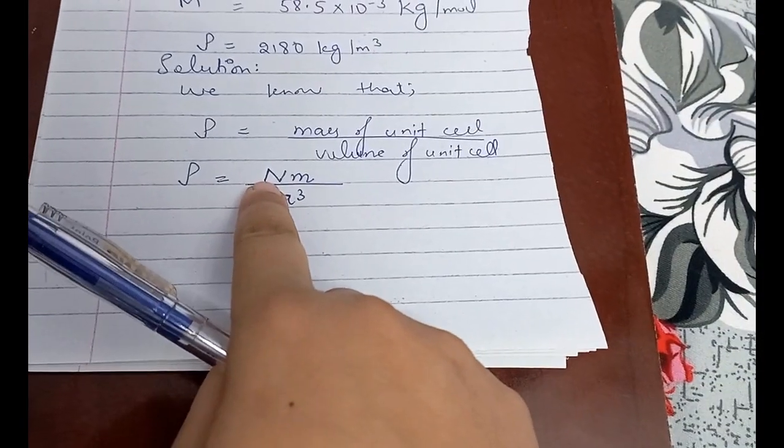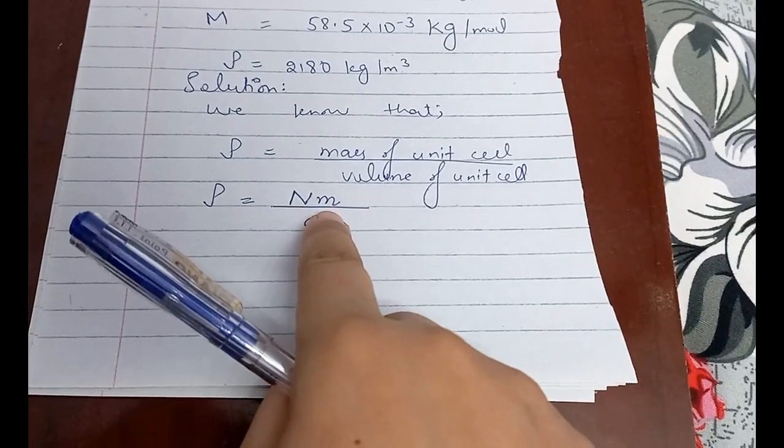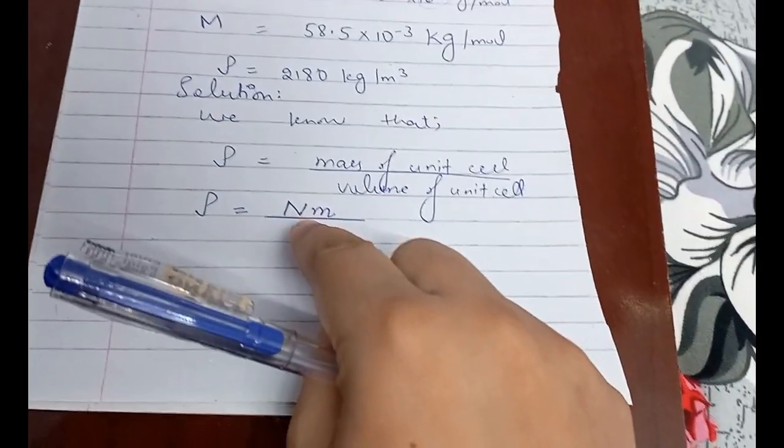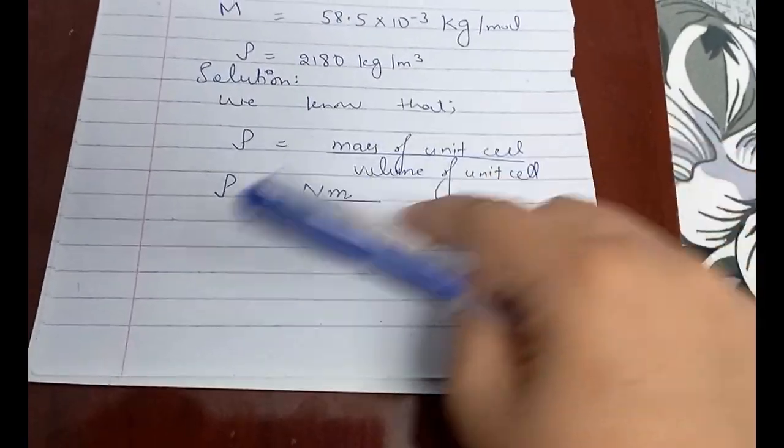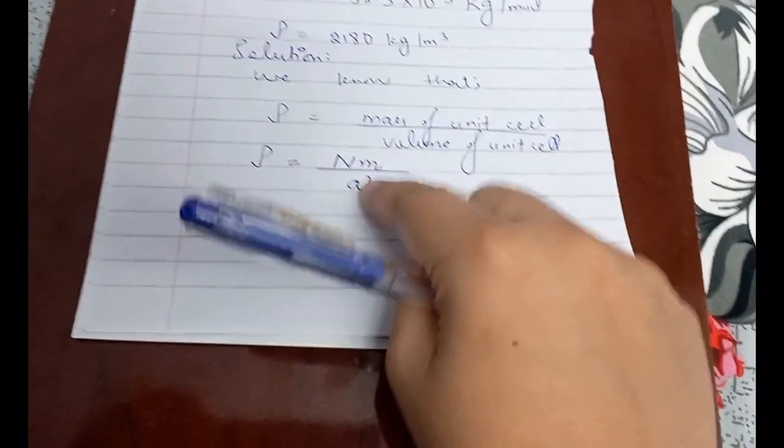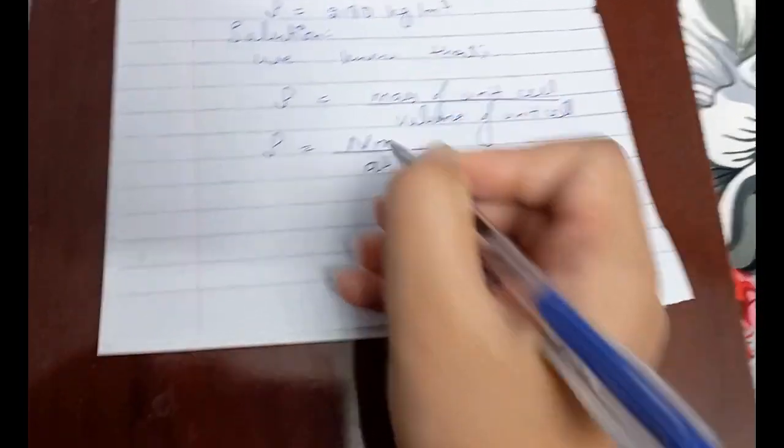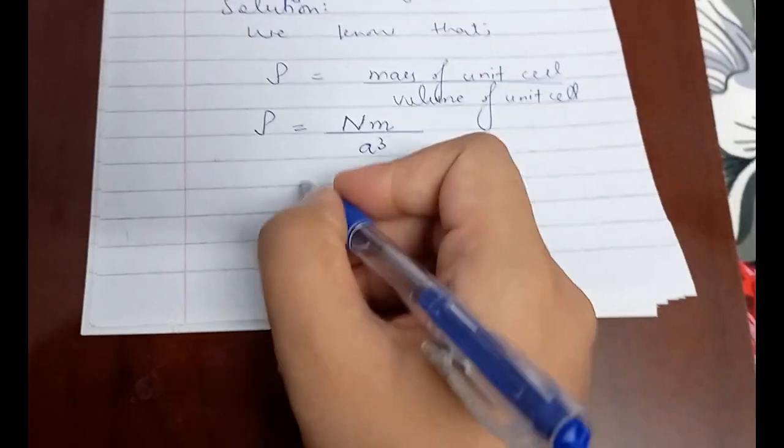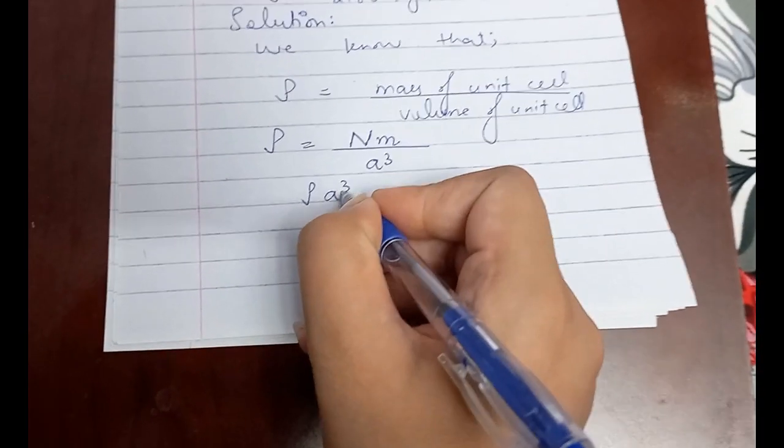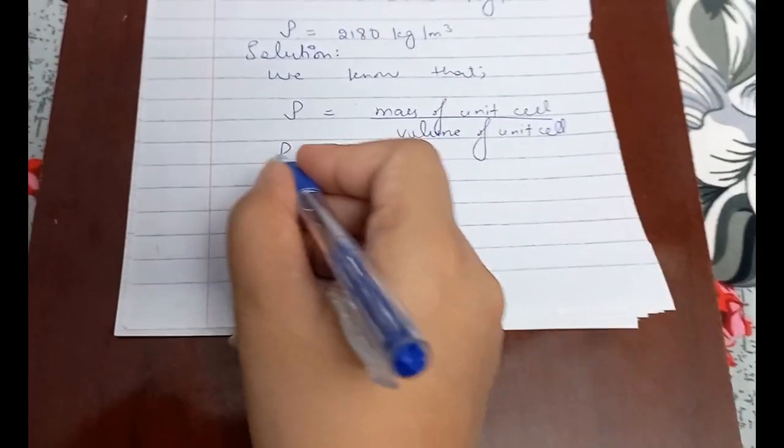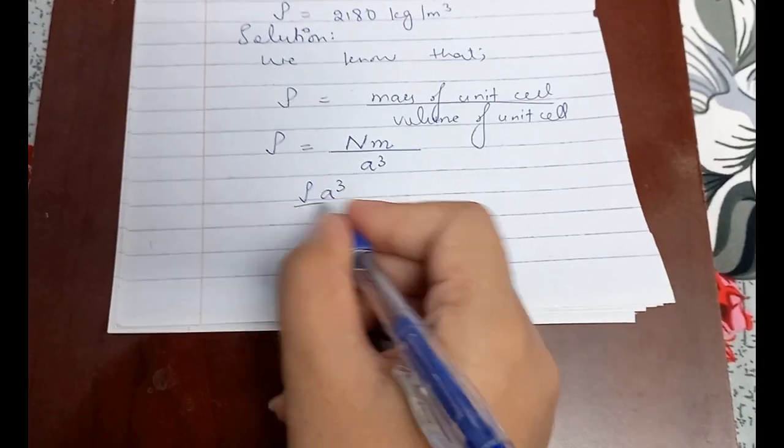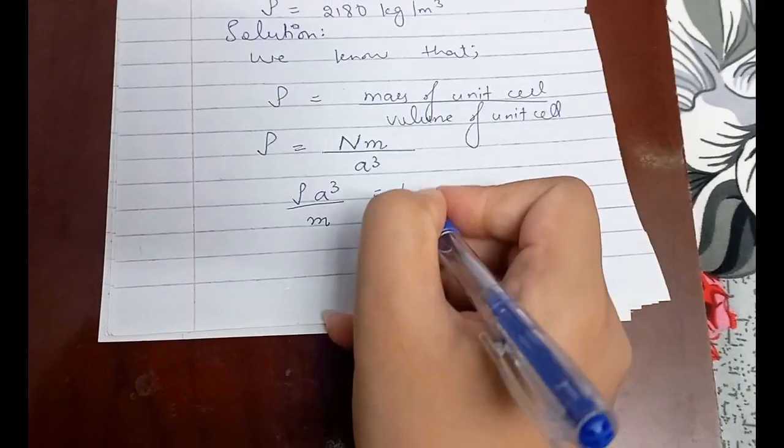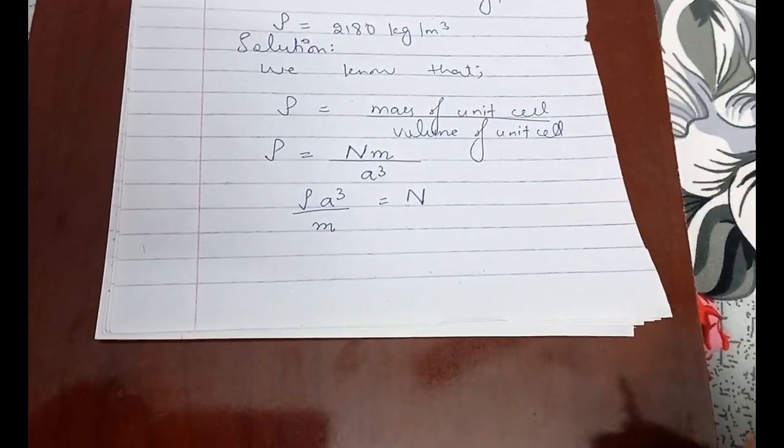Total mass of unit cell is given by capital N multiplied by the mass of each atom, which in that case is NaCl. We are interested in capital N. A cube is dividing here so it will be multiplied on the other side of equation, and this small m will be divided here so that N is left, which is needed to be calculated. Capital N equals rho a cube by small m.